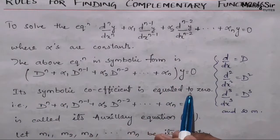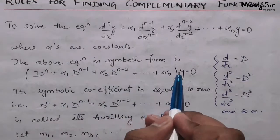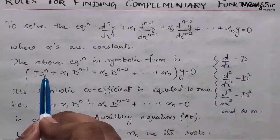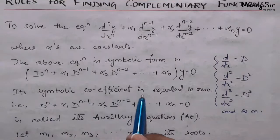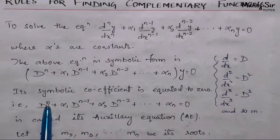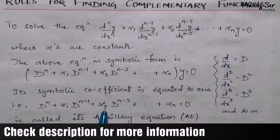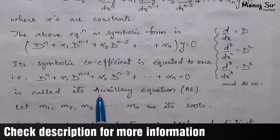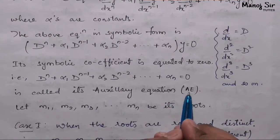Its symbolic coefficient is equated to zero. The symbolic coefficient means the coefficient of y — that is D^n plus α₁·D^(n−1) plus α₂·D^(n−2) plus dot dot dot plus αₙ equals zero. This is called the auxiliary equation, written in short form as A.E.